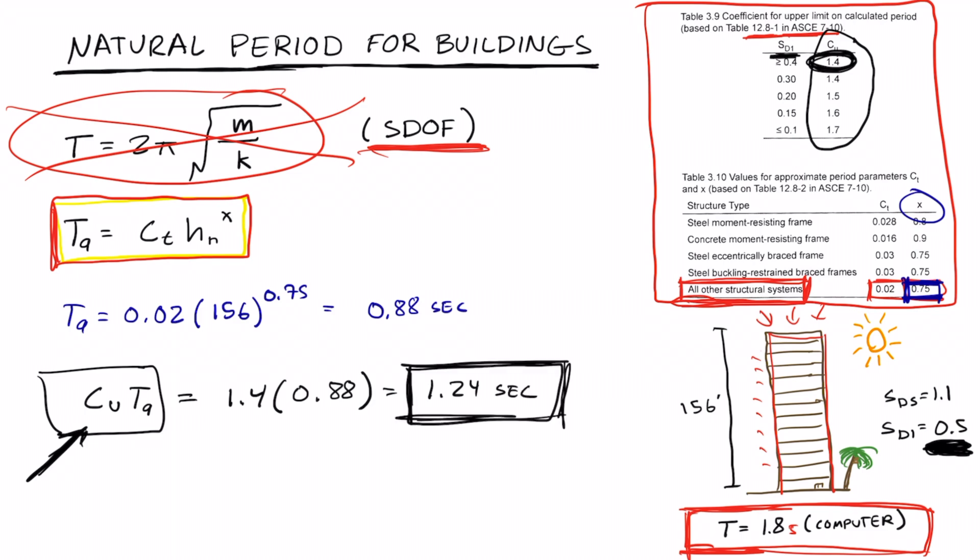Since the upper limit is less than the computer model, we will actually use this value instead of the computer generated natural period. So when we want to compute CS, we will use this value for T and not the computer generated value.